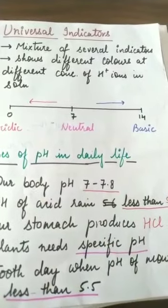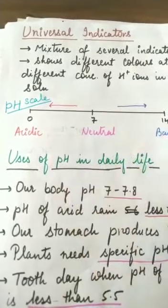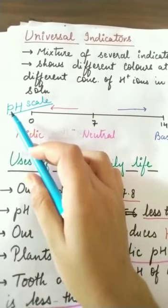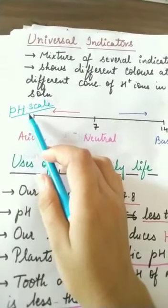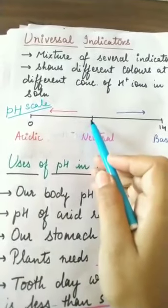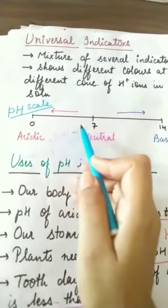This measurement is called the pH scale. What is pH? P stands for power and H for hydrogen ions: power of hydrogen ions. This gives you the concentration of hydrogen ions. If the concentration of hydrogen ion is more, it will go from 0 to 7. If the concentration of hydrogen ion is less, it will go from 7 to 14.